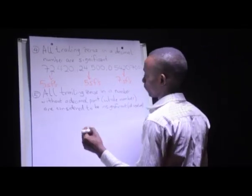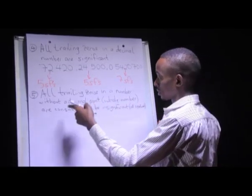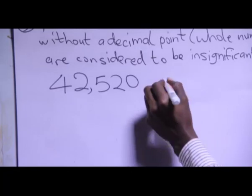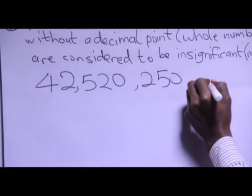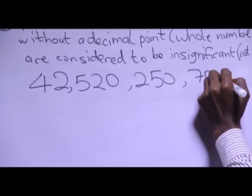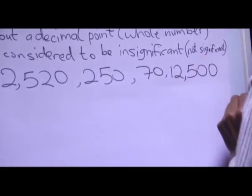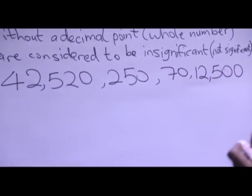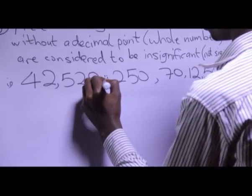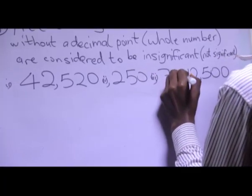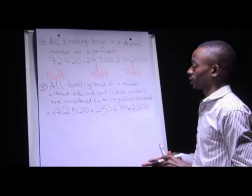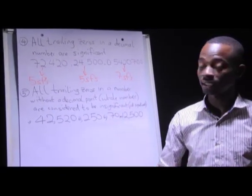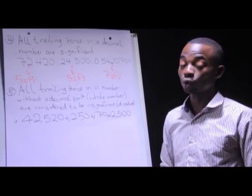We are now dealing with whole numbers — numbers without decimal places. The examples are: 42520, 250, 70, and 2520. In all four numbers I am required to find the number of significant figures. Based on condition five, all trailing zeros at the end of a whole number are not significant. Looking at 42520, the zero at the end is not significant — it could only be significant if there were a decimal point. Since this is a whole number, the trailing zero is not significant.